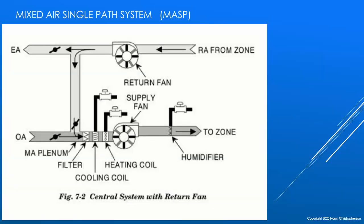The mixed air single path system is far more common. In the 100% outdoor air unit, we were bringing all air in from outside, treating it, and then exhausting it. In this system, we bring maybe 10 or 15% of our air in from the outdoor air side, but we take most of our air back from the return air side and mix it with that outdoor air — we call that mixed air. Then we run it through the filter, cooling coil, and heating coil as necessary, and the fan moves it down the duct into the zone. When you open the outdoor air damper even 10 or 15%, you are pressurizing the building.